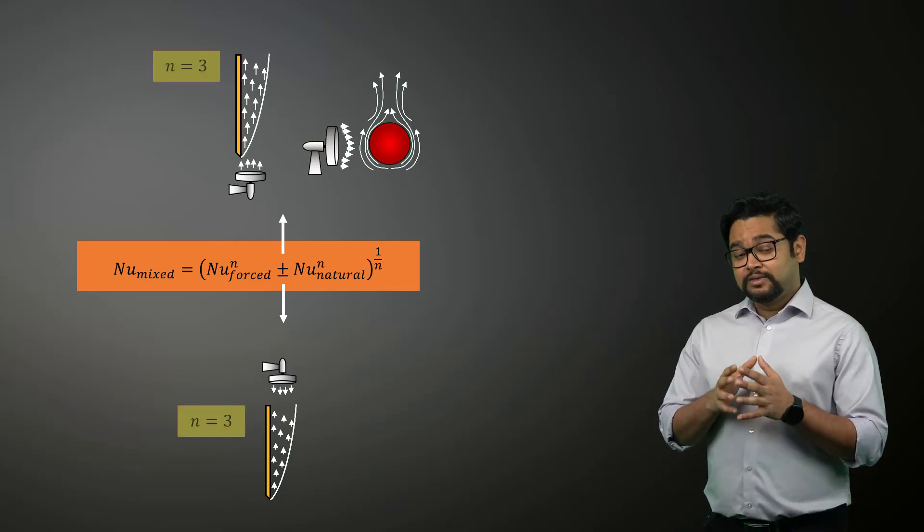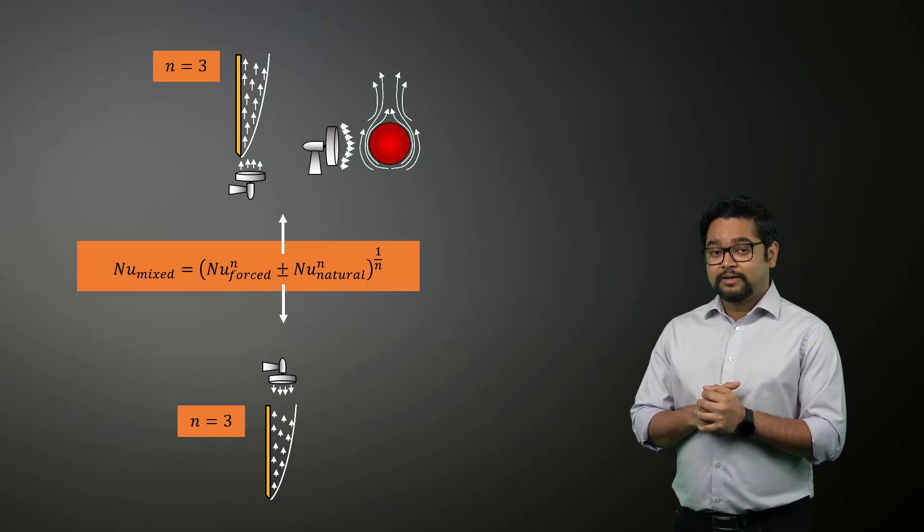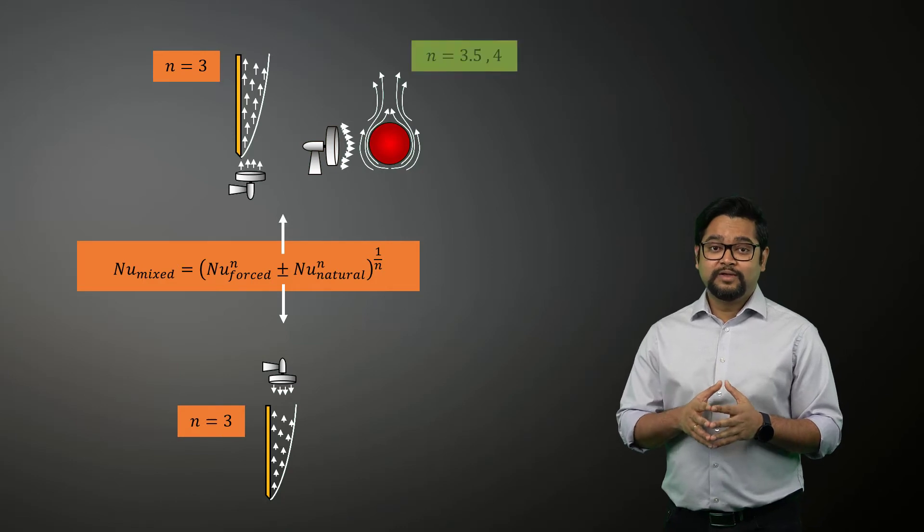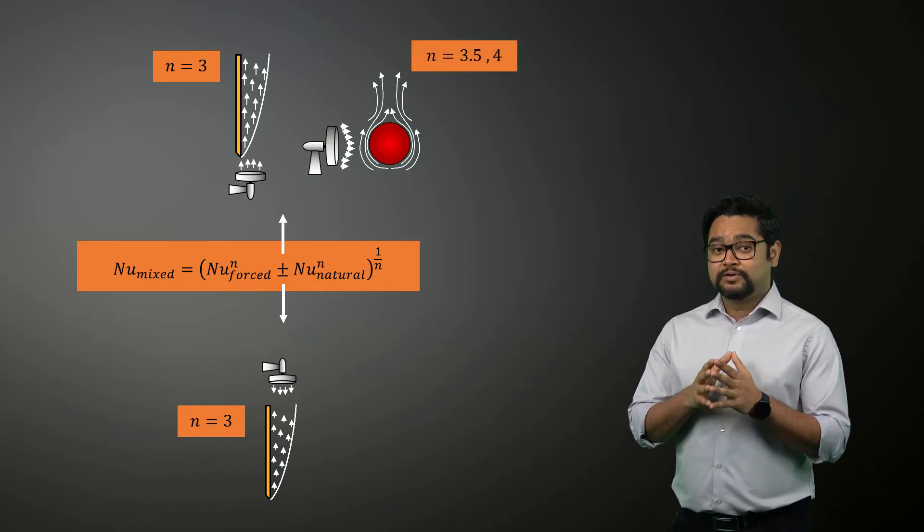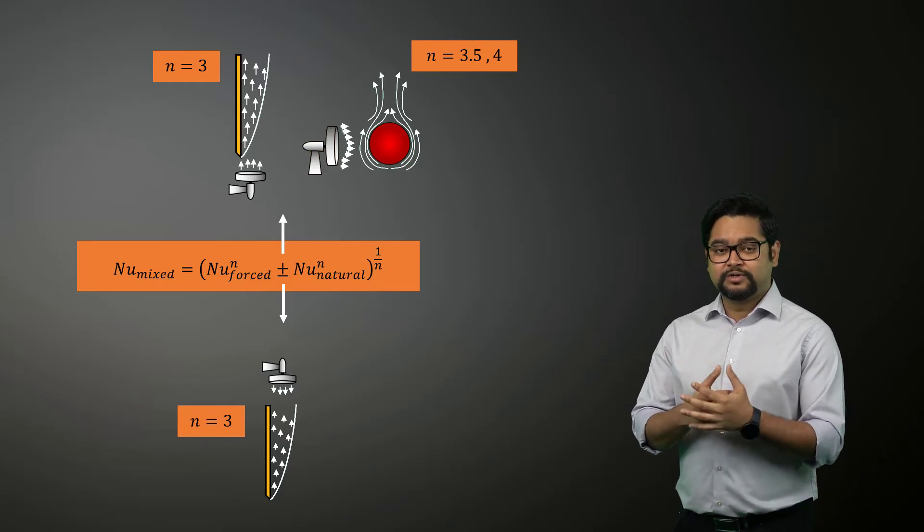It is observed that the value of N equals 3 correlates with experimental data for vertical surfaces pretty well, and values of N equals 3.5 and 4 are better suited for transverse flows involving horizontal plates and cylinders or spheres respectively.